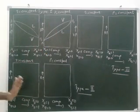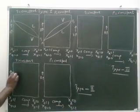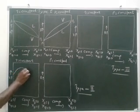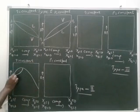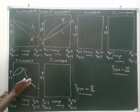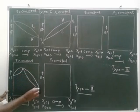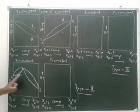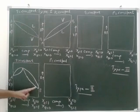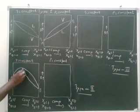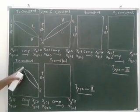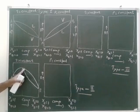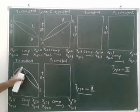Next is Type 2, the second type. In the vapor pressure composition diagram of Type 2, A has high vapor pressure and B has low vapor pressure, but one particular composition of the solution has a very high vapor pressure — higher than both pure components A and B.